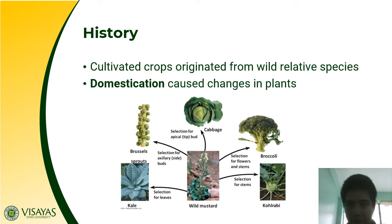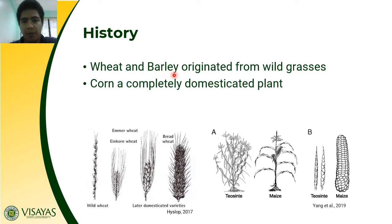Wheat and barley are other example crops that originated from wild grasses. In the picture below, we have the wild wheat — as you can see, the panicle is slender compared to later domesticated varieties. We have a bigger panicle with longer awns, and this one has many seeds in a panicle for bread wheat.